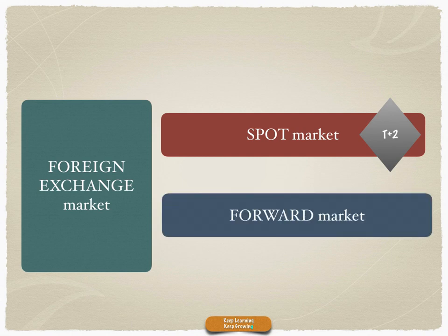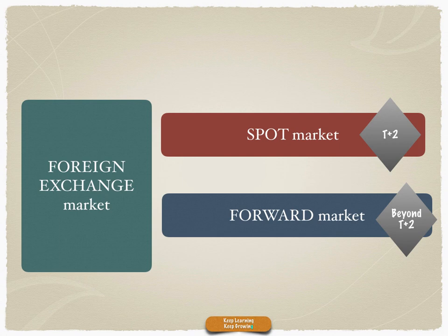Anything beyond T plus 2 is called the forward market. So the interbank FX forward market is for settlement beyond T plus 2 — beyond the spot market. It can be for one week, one month, three months, six months, up to a year. In some currencies like Euro and USD, it can go right up to five years as well.